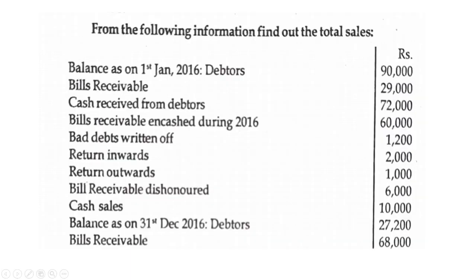The next problem is to find out total sales. From the following information: balance as on 1st January 2016 — debtors (opening) 90,000; bills receivable 29,000; cash received from debtors 72,000; bills receivable encashed during 2016 — that is bills receivable honoured — 60,000; bad debts 1,200; return inwards 32,000; return outwards 1,000; bills receivable dishonoured 6,000; cash sales 10,000. Balance as on 31st December 2016: debtors 27,200; bills receivable 68,000.